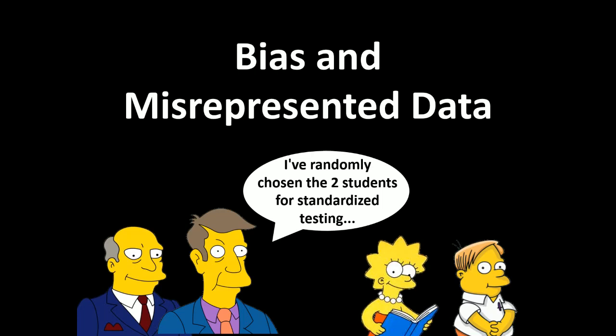For this title slide, I put this on for those of you who aren't familiar with The Simpsons. On the left we have Superintendent Chalmers and Principal Skinner, and on the right we have Lisa and Martin. The quote is basically saying 'I've randomly chosen two students for standardized testing.' Anyone who watches The Simpsons will know Lisa and Martin are by far the smartest two kids at Springfield Elementary, leading to a heavy bias showing the school performing much better than it is.